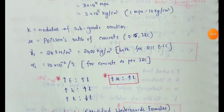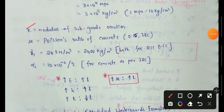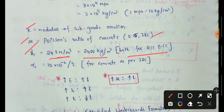K means Modulus of Subgrade Reaction. Mu means Poisson's Ratio of Concrete, which is 0.15 as per IRC. The density of concrete is 24 kN per meter cube, which is 2,400 kg per meter cube, both for RCC and CC — reinforced cement concrete and cement concrete roads.